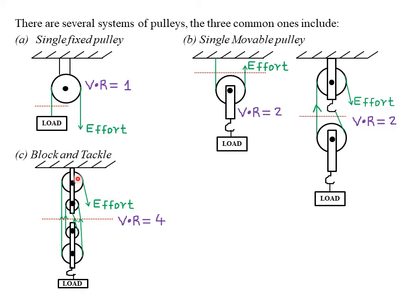For the block and tackle system, we can see that the final rope — the effort rope — is acting downwards, in a direction similar to the force of gravity. When the effort acts downwards, it does not contribute to the velocity ratio. Therefore, the only ropes contributing to velocity ratio are this rope, the second rope, the third rope, and the fourth rope. The effort does not contribute because it acts in the direction of the weight. Therefore, the velocity ratio for this system is 4.